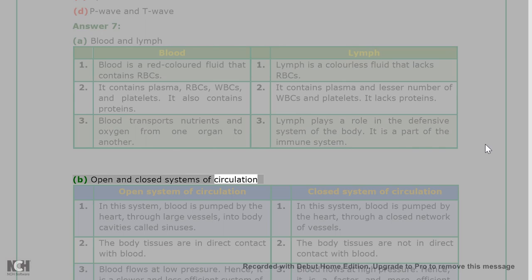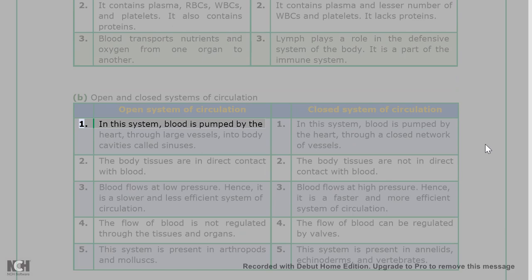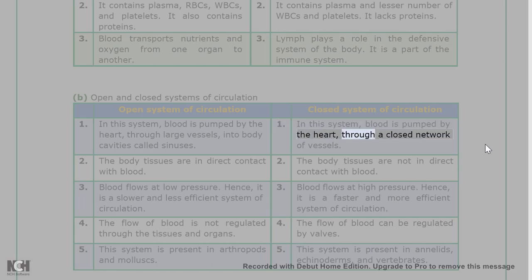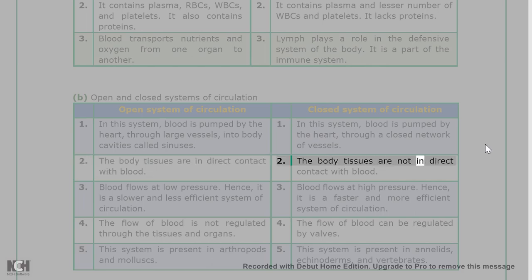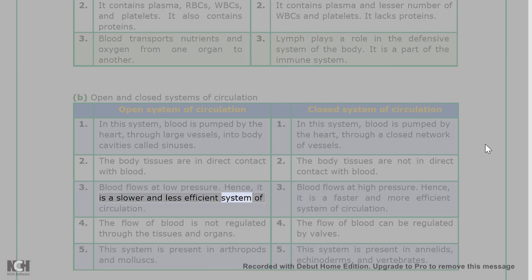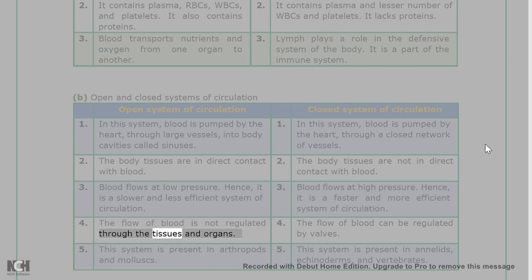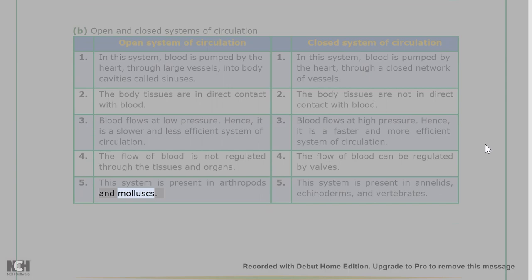Question 7B: Open and closed systems of circulation. In the open system, blood is pumped by the heart through large vessels into body cavities called sinuses; body tissues are in direct contact with blood; blood flows at low pressure, making it slower and less efficient; the flow of blood is not regulated through tissues and organs; this system is present in arthropods and mollusks. In the closed system, blood is pumped through a closed network of vessels; tissues are not in direct contact with blood; blood flows at high pressure, making it faster and more efficient; blood flow can be regulated by valves; this system is present in annelids, echinoderms, and vertebrates.